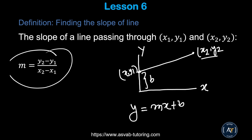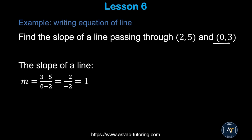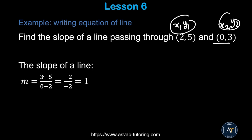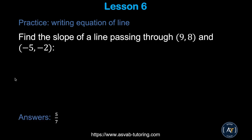Let's apply this formula to a problem: find the slope of a line passing through (2, 5) and (0, 3). Label them x1, y1, x2, y2, then plug into the formula. That gives you (3 − 5) / (0 − 2) = −2 / −2 = 1. So m = 1 is the slope of this line.